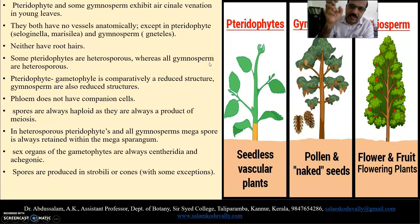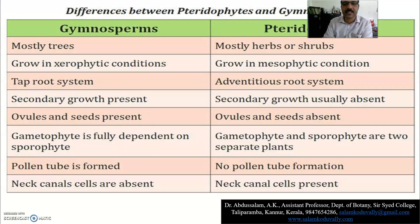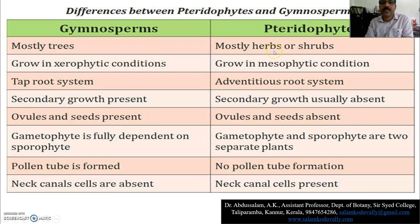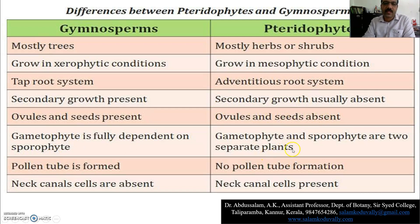These are some of the most important similarities and differences between pteridophytes and gymnosperms. The differences: gymnosperms are mostly trees, while pteridophytes are mostly herbs and shrubs. Gymnosperms grow in xerophytic conditions; pteridophytes grow in mesophytic conditions. Gymnosperms have a tap root system; pteridophytes have an adventitious root system. Secondary growth is present in gymnosperms but usually absent in pteridophytes. Ovules and seeds are present in gymnosperms but absent in pteridophytes. The gametophyte is fully dependent on the sporophyte in gymnosperms; in pteridophytes, gametophyte and sporophyte are two separate plants. A pollen tube is formed in gymnosperms; no pollen tube is formed in pteridophytes. Neck canal cells are absent in gymnosperms.